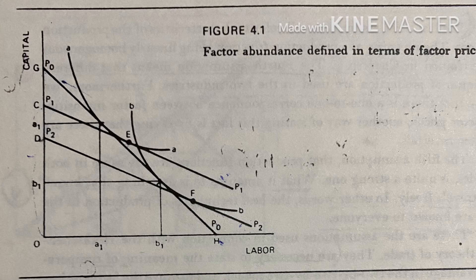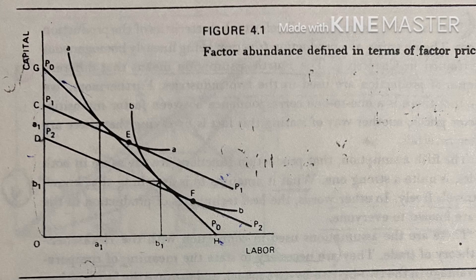Thus in country two it is more expensive to produce a given amount of good A than to produce the same amount of good B. Comparing production costs in the two countries, we find that it is relatively cheap to produce good A in country one and relatively cheap to produce good B in country two. From this it follows that country one will export good A and country two will export good B. This establishes the Heckscher-Ohlin theory: the country abundant in capital will export the capital-intensive good and the country abundant in labor will export the labor-intensive good.